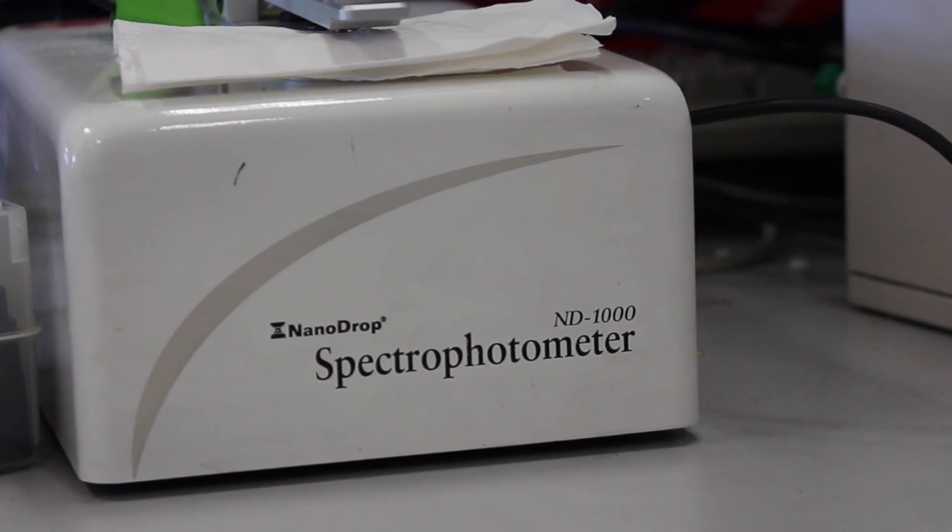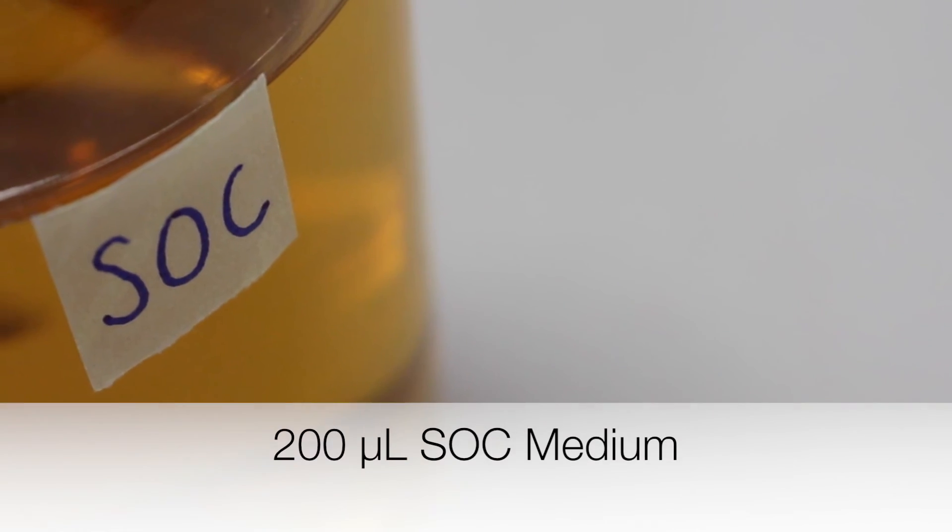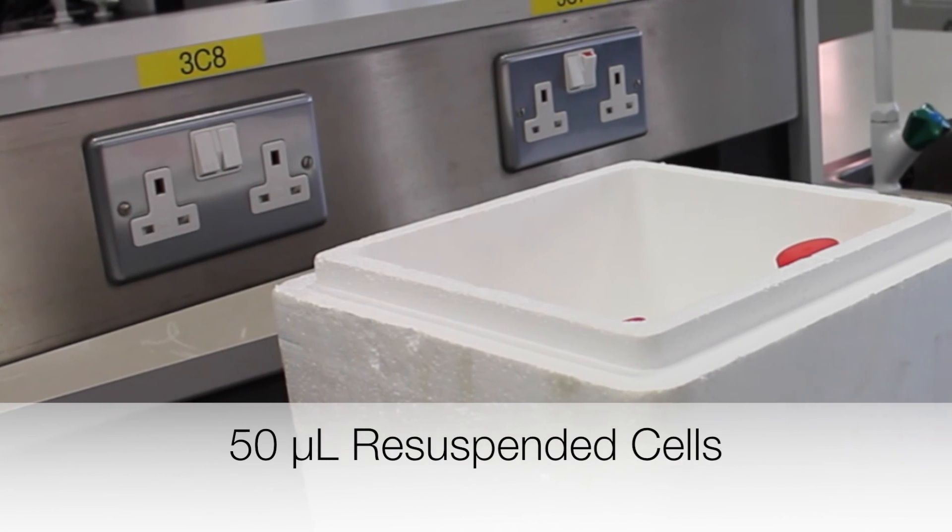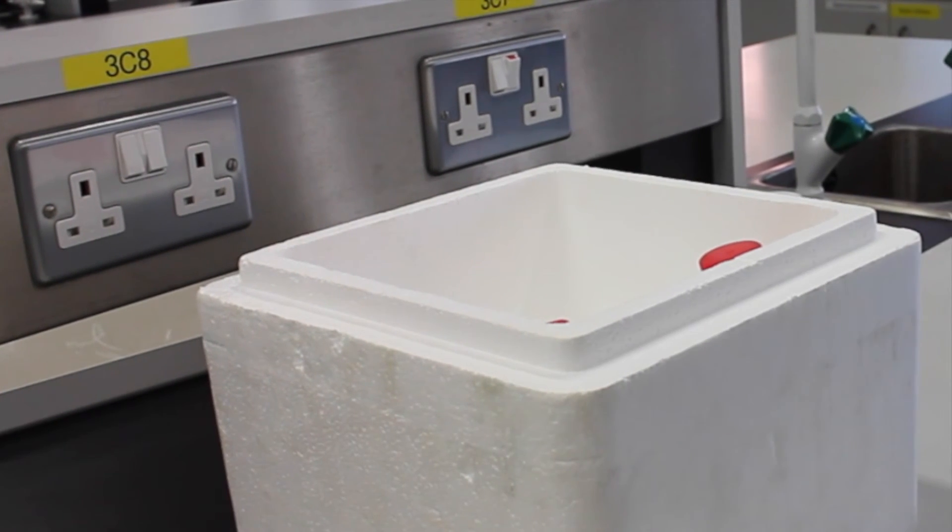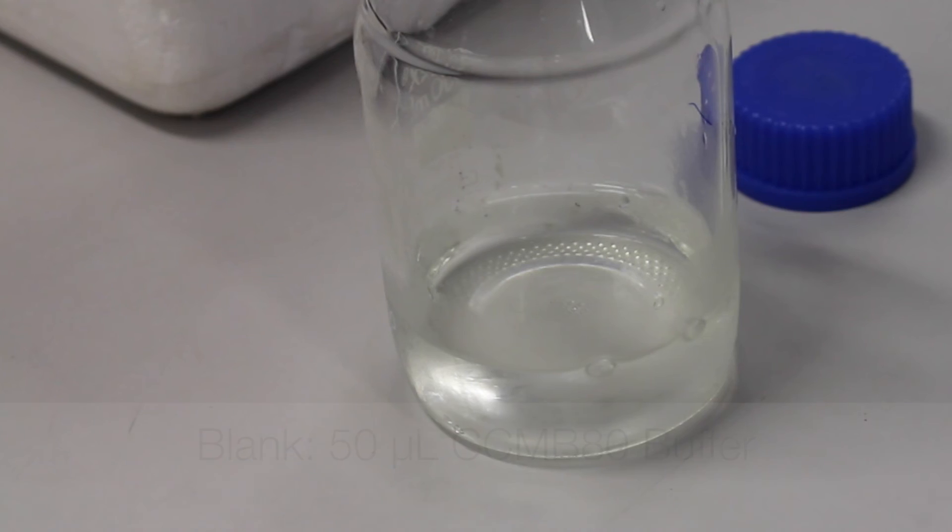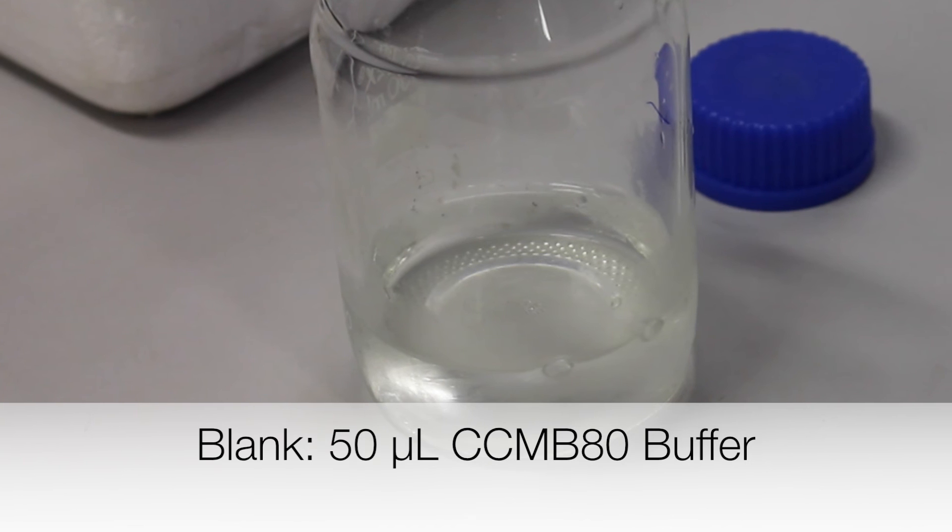Use the NanoDrop to measure the optical density of a mixture of 200 µL of SOC medium and 50 µL of the re-suspended cells. Use a mixture of 200 µL of SOC and 50 µL of CCMB-80 buffer as the blank.